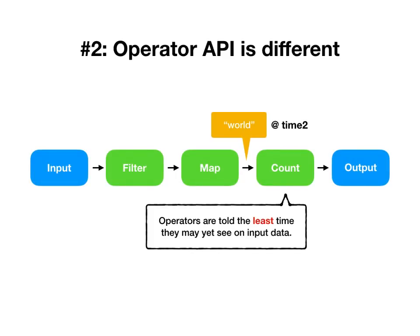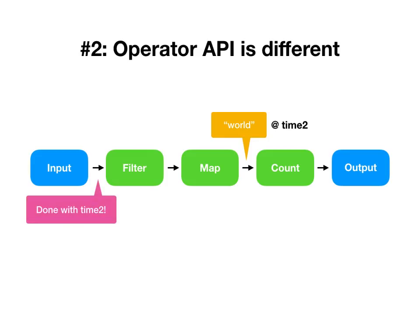The operator API is how operators like count, filter, and map interact with the system. The system is tasked with telling operators like count what is the least time at which they may yet see input data, and to learn that it needs to learn from filter and map what they plan on producing in their output.